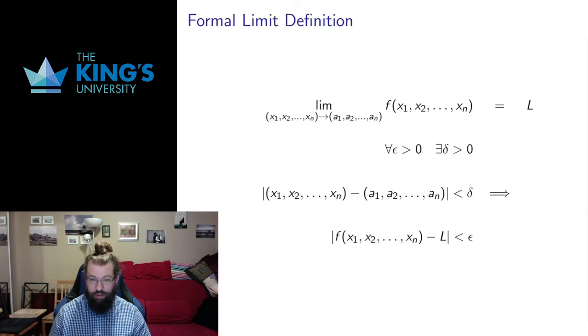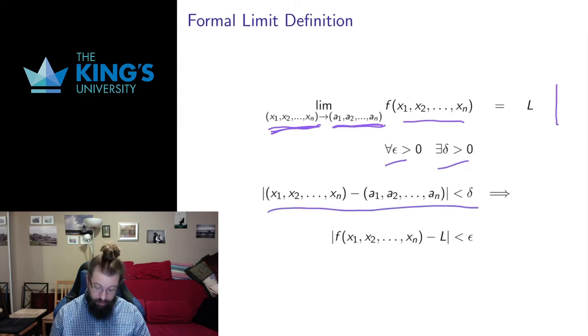The formal definition is very similar to the single variable limit. The only difference now is that we have a whole vector of directions to approach. We're now dealing with a domain that is in R^n, we have a function that depends on n variables. So instead of just x approaching some value, we have a vector x1 up to xn approaching some value a1 up to an. This statement means for all epsilon greater than 0 there exists a delta such that if the input is within delta, the output is within epsilon.